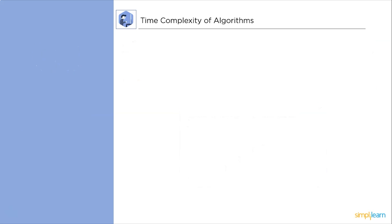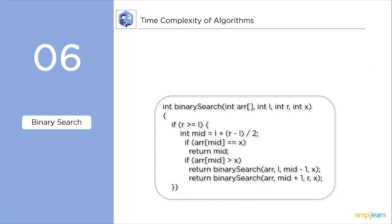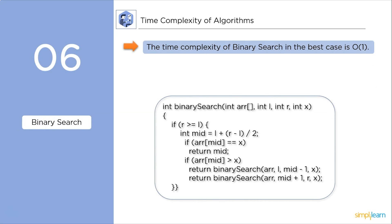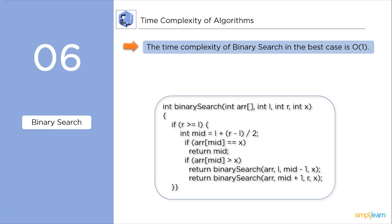Finally, binary search. In the best case scenario, if the element to be searched is at the mid, then the time complexity will come out to be constant O(1). Whereas in the worst case scenario, the time complexity will come out to be O(log n).